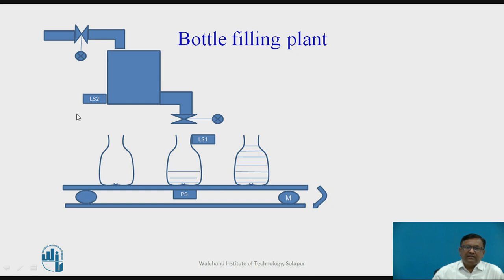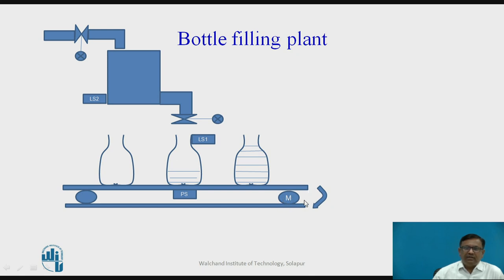If you look at the bottle filling plant, let us first study what this water filling plant is and how things are automated. Bottles to be filled are moving on a conveyor belt run by motor M. Motor M rotates in a clockwise direction, and the conveyor belt rotates from left to right.